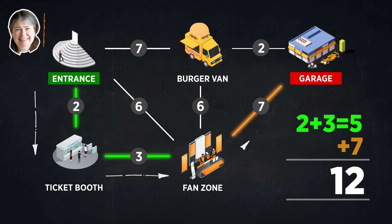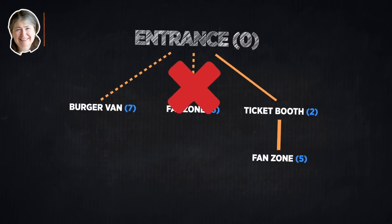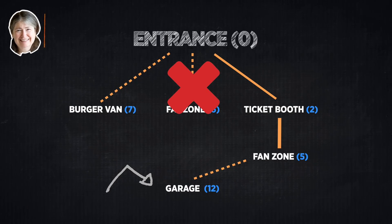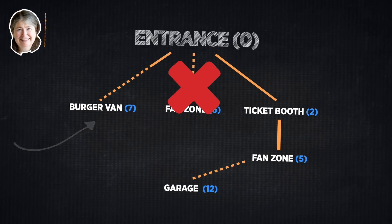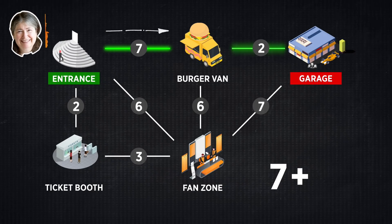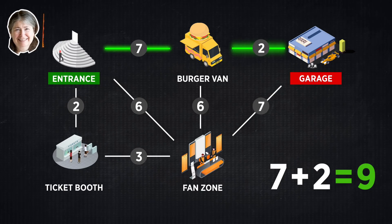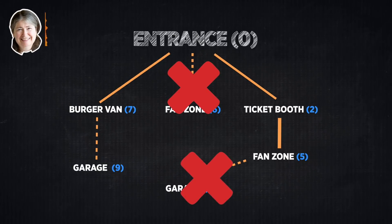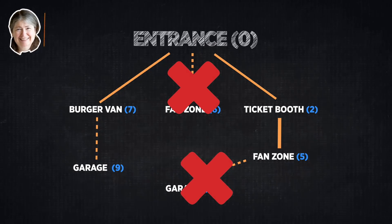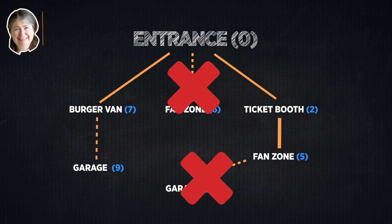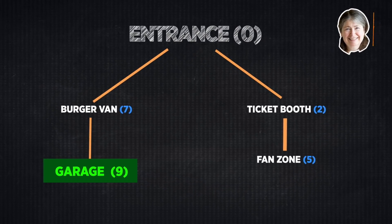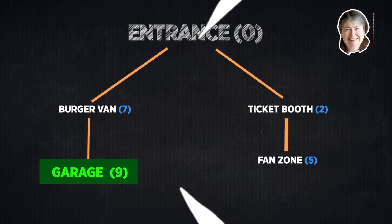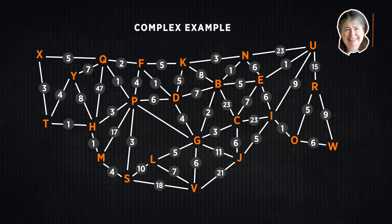We can also reach the garage through the fan zone at a cost of 12 — that's 5 plus 7 — so put the garage under fan zone with a 12. Now the smallest dotted line is the burger van at 7. Through the burger van, we can reach the garage at a cost of 9 — that's 7 plus 2 — which is better than 12, so put the garage under the burger van at 9. The only dotted line remaining is the garage, and there's no better path through it to anywhere else, so you're done. The tree you've drawn gives the fastest path from the entrance to any location. With a simple example this might seem complicated, but when a network gets very large, this algorithm works really well.